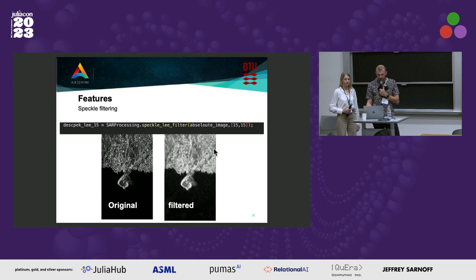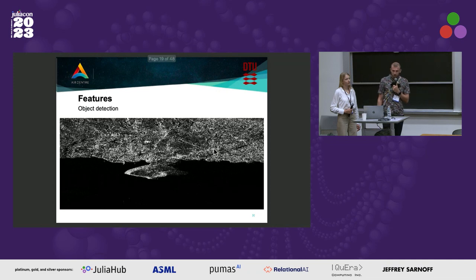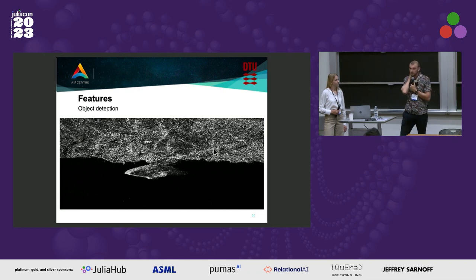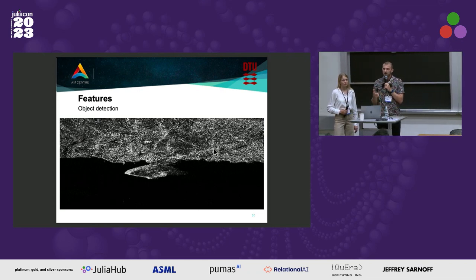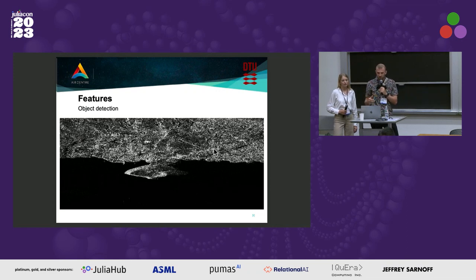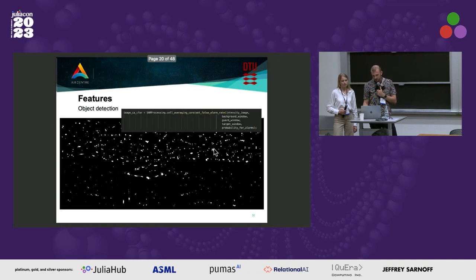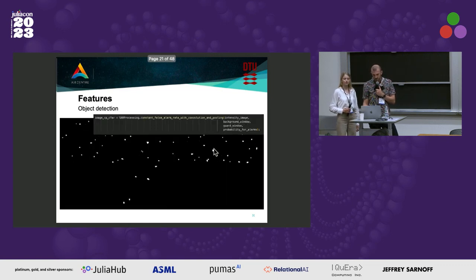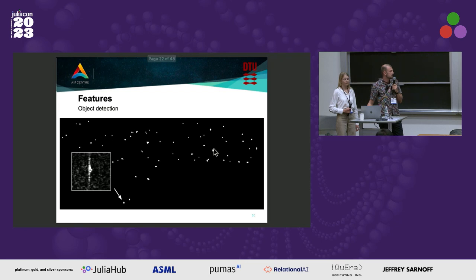Then you have a nice image and you want to work with it. One of the really nice things to do is object detection. There are a bunch of object detectors in the image suite in Julia. However, within the SAR community, people prefer object detectors that use the statistics of the image and where you can know how many false alarms you approximately get. One of them is the so-called constant false alarm rate, or CFAR. We have implemented a few of those. From the detected objects from CFAR, you can then easily extract objects and do further analysis.